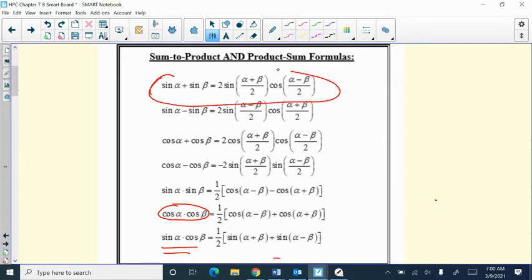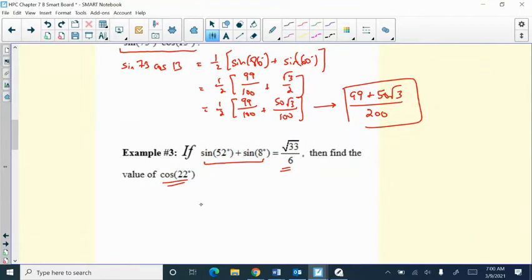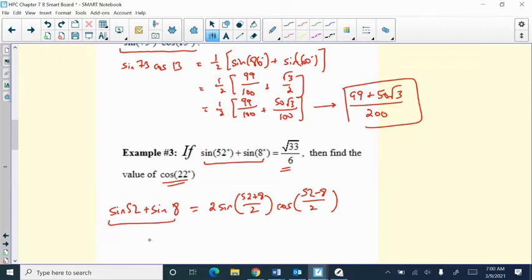Sine of alpha plus sine of beta. So it's two times you average the angle and then you do cosine of the reverse average. So two sine of the average, cosine of the difference divided by two. So I know that that would be two sine of, I could do 52 plus eight divide by two, and that's cosine of 52 minus eight over two. So that's what sine of 52 plus sine of eight equals. So it's like you're creating your own equation and then you put in the missing pieces. Well, they tell us what this expression. They're giving this to us to be square root of 33 over six.